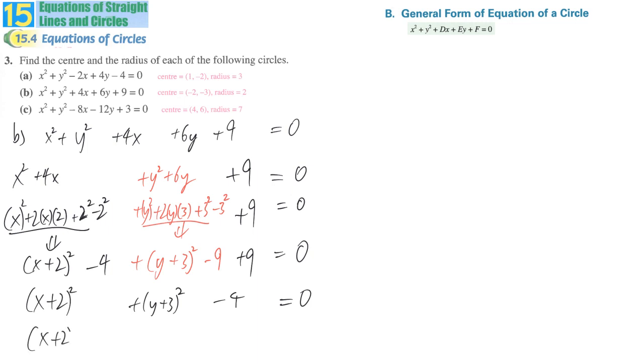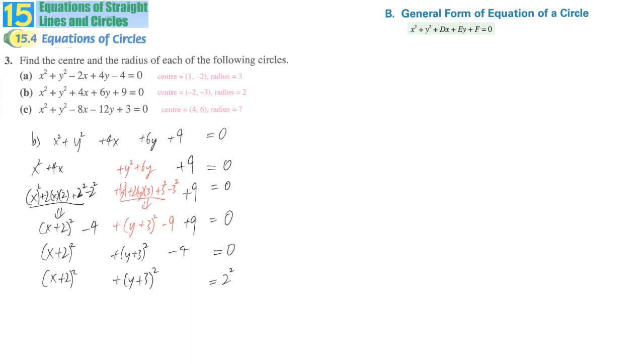So, (x + 2)² + (y + 3)² is equal to 2². By using this format, we can easily identify the center is (-2, -3).